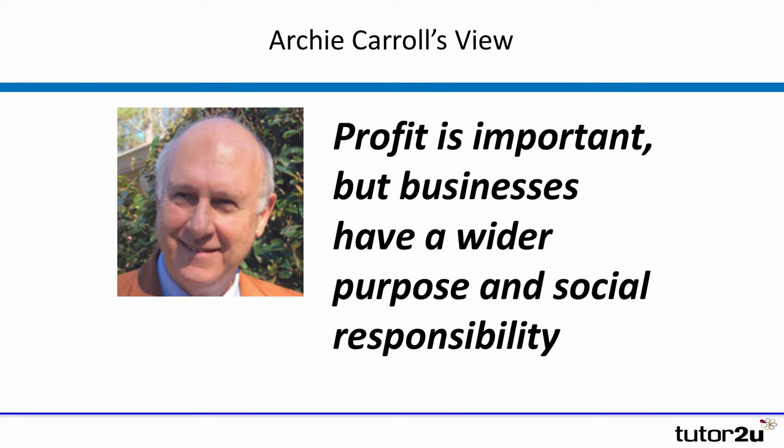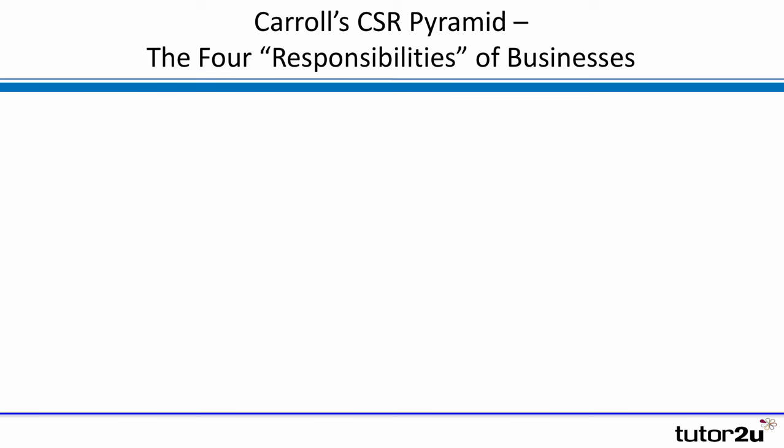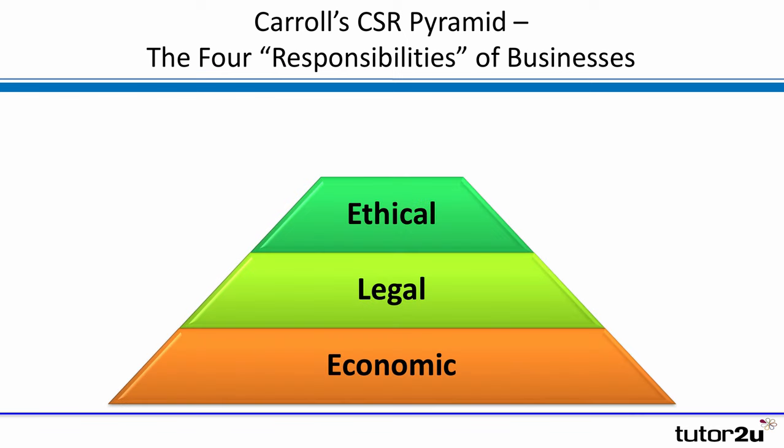His view was that whilst profit is important, businesses need to think wider in terms of both their purpose and their responsibilities to society. And so he developed the CSR pyramid, which has four elements to it. The key thing to remember about the pyramid is that it's just a framework for thinking about CSR — it's not necessarily a model that you apply in terms of making decisions about CSR.